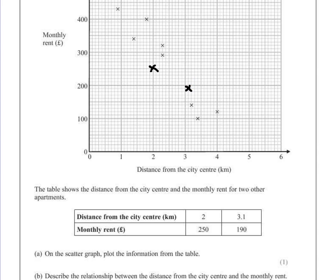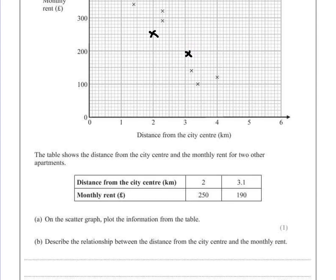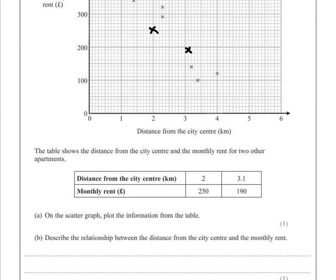Once again, a small cross at those coordinates will give us that full mark. If you miss one of those points or you're not accurate enough, you could risk losing that one mark, so be careful.